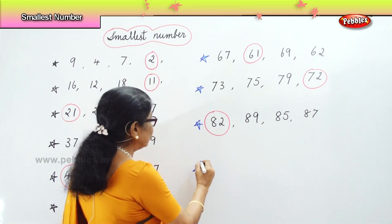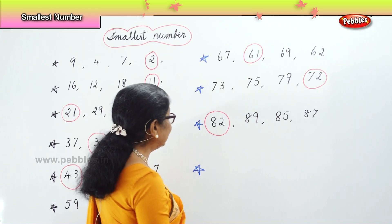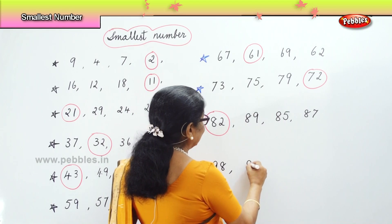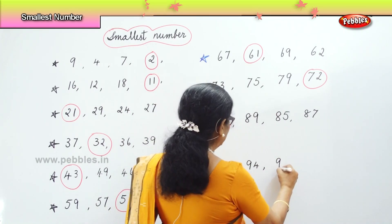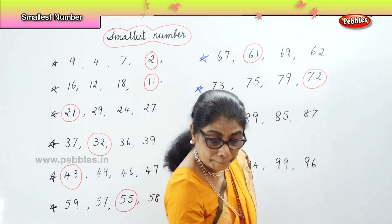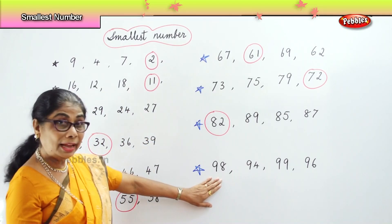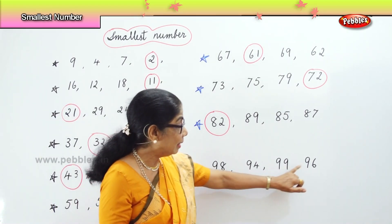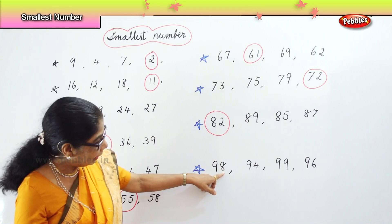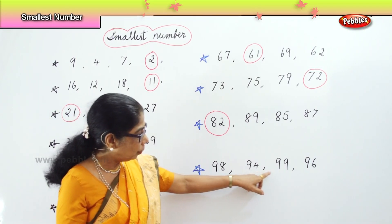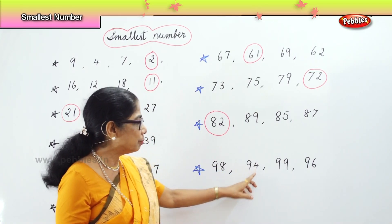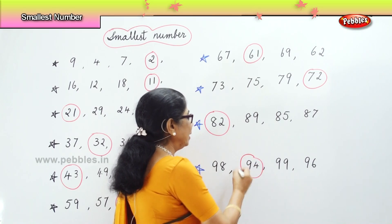And finally, let's go into the 90s. You have 98, 94, 99, and 96. All numbers in 90s — all 9s in the first place. Look at the second place: 8, 4, 9, 6. Which is the smallest? 4. So, 94 is the smallest among the 4 numbers.